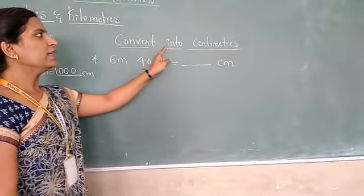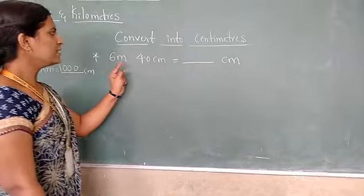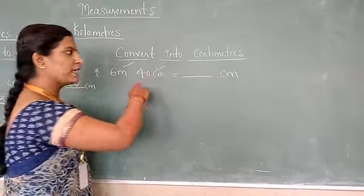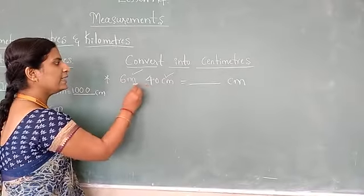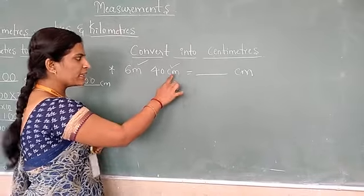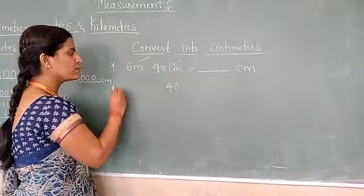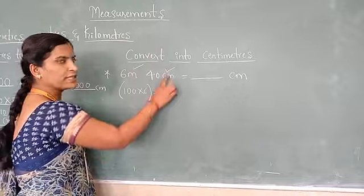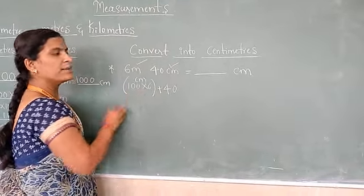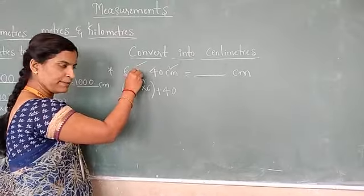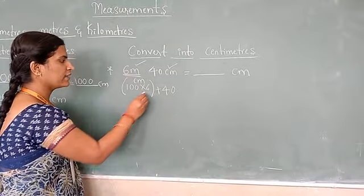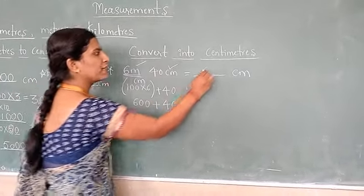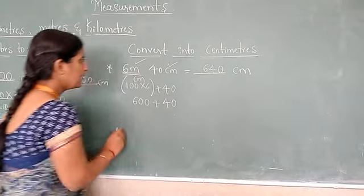Next, we will see convert into centimeters when both meters and centimeters are given. 40 is already centimeters. 6 meters we have to convert in terms of centimeters. How? 100 multiplied by 6, plus 40. 6 into 100 is 600 plus 40, which will become 640 centimeters.